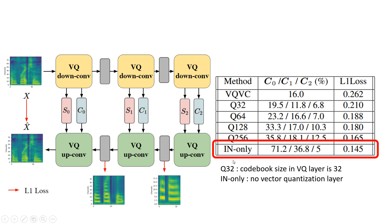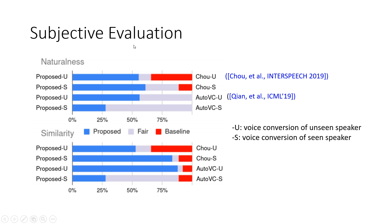Next is the subjective evaluation. We compared our model with VQVC and AutoVC. The blue bars mean subjects prefer the result of our model, and the red bars mean subjects prefer the other one. U means the voice conversion result of unseen speakers, S is the voice conversion result of seen speakers in training. We compared our model with the other ones on both naturalness and similarity, and we showed that our model performs better on both, and for both unseen and seen voice conversion tests.